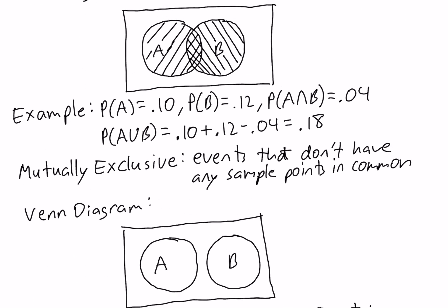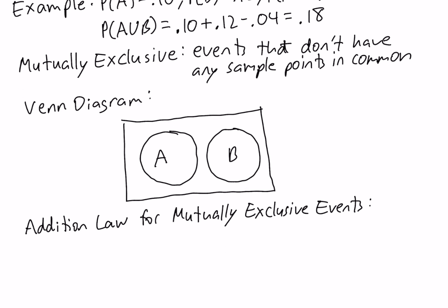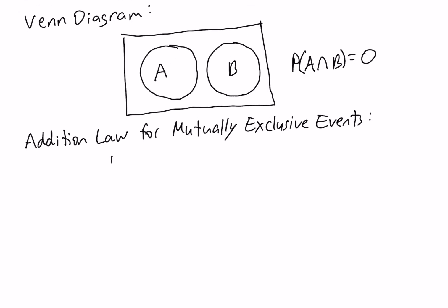The addition law we saw before was: the probability of A union B is equal to the probability of A plus the probability of B minus the probability of A intersection B. Now, if events are mutually exclusive, then their intersection is empty — meaning there are no sample points in the intersection — which means the probability of the intersection is equal to 0. So our addition law becomes: the probability of A union B is simply the probability of A plus the probability of B. We don't have to subtract the intersection because its probability is 0.